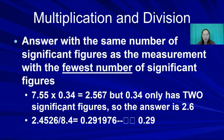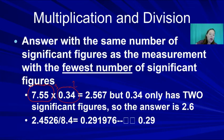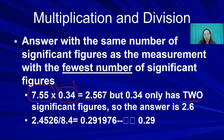For multiplication and division — which we'll use most in this class — your answer should have the same number of significant figures as the number with the fewest significant figures. For example: 3 sig figs × 2 sig figs — the answer is limited to 2 sig figs. A calculation gives 2.567, but rounded to 2 sig figs becomes 2.6 (since the next digit is 6, we round up).